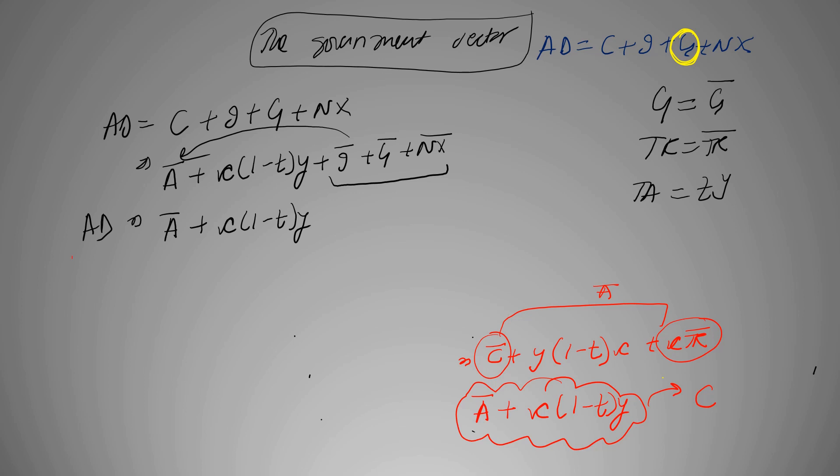And we know that economy is in equilibrium, so AD is equal to Y. Therefore Y is equal to... okay, and this is the equilibrium output in case of presence of government sector.